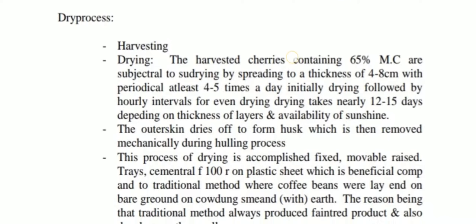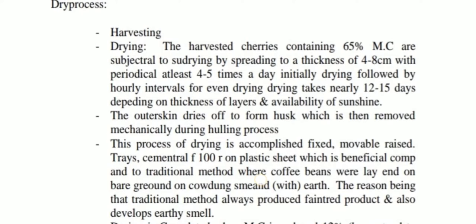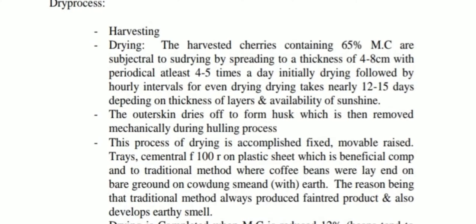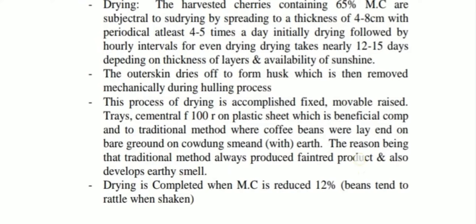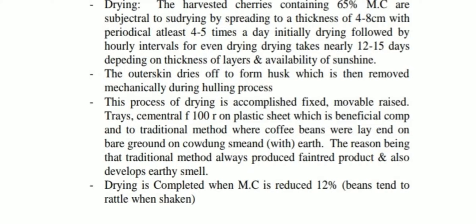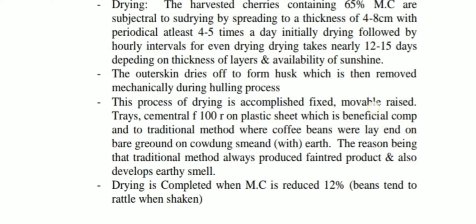First is dry processing. The steps are harvesting then drying. The harvested cherries contain 65% moisture content. They are subjected to sun drying to a thickness of 4 to 8 cm, turned at least 4 to 5 times a day initially, then at hourly intervals for even drying, and drying takes nearly 12 to 15 days. Plastic sheets are suitable for drying. Moisture content is reduced down to 12%.